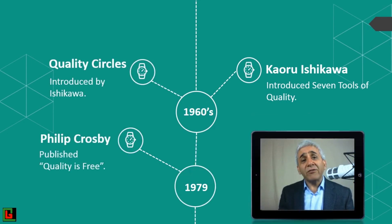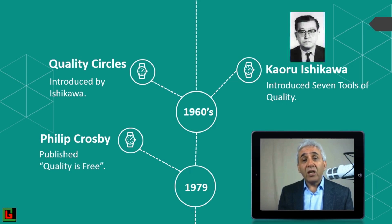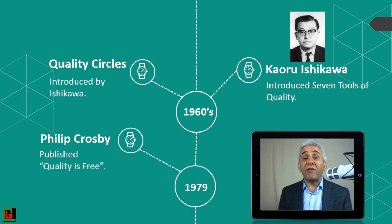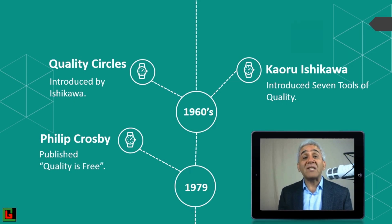Just like the 1950s, a lot of things were happening in the 1960s as well. Ishikawa introduced the seven quality tools and the concept of quality circles. These two things were very fundamental in empowering workers to solve quality problems in Japan — workers were given the chance to solve quality problems using these seven quality tools and by participating in quality circles.